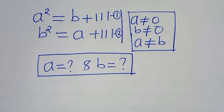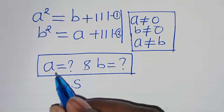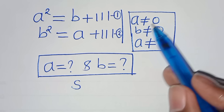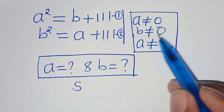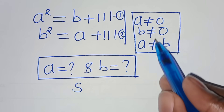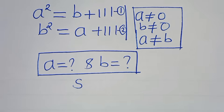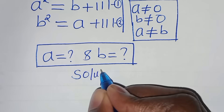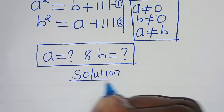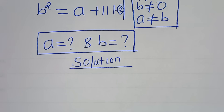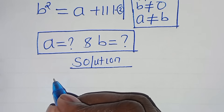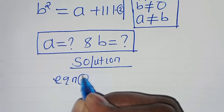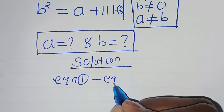The first step from here is to solve for a and b, given that a is not equal to 0, b is not equal to 0, and a is not equal to b. The first step here is to subtract equation 1 with equation 2.